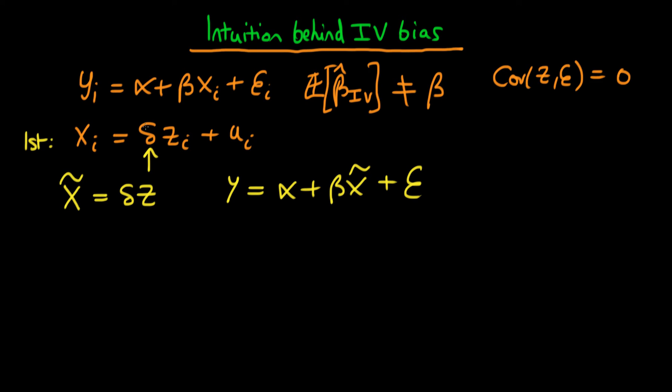Because we know delta exactly and because u is completely uncorrelated with z by definition, we then know that there is going to be no correlation between x tilde and epsilon. Because x tilde contains none of u and the bias in least squares is coming about because of the covariance between u and epsilon.